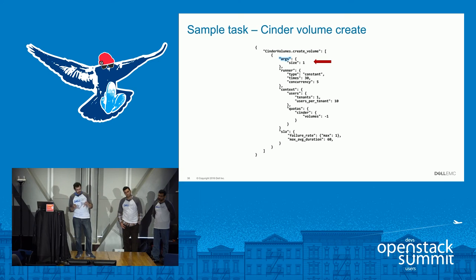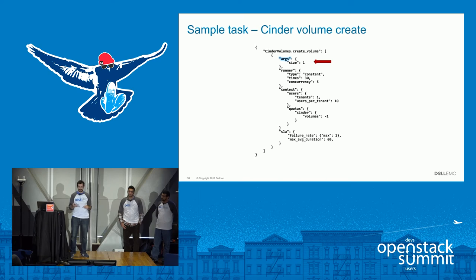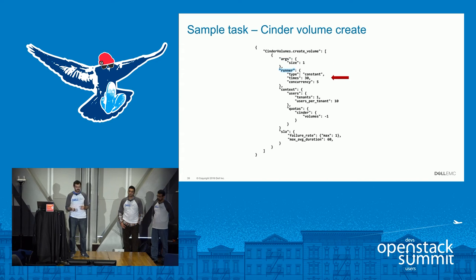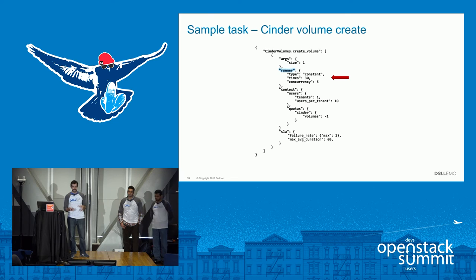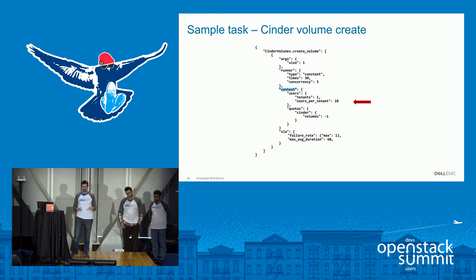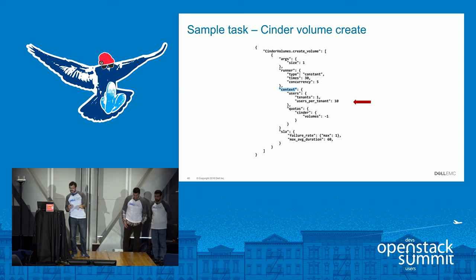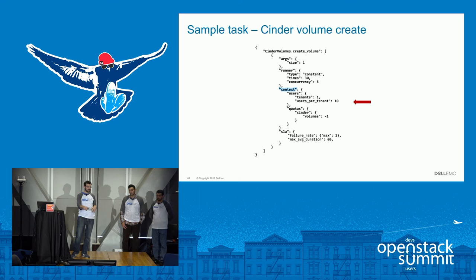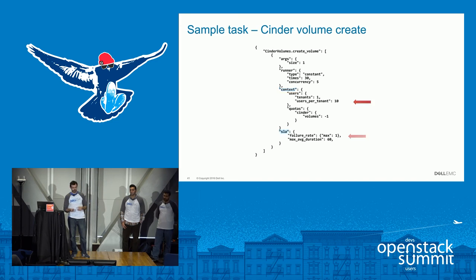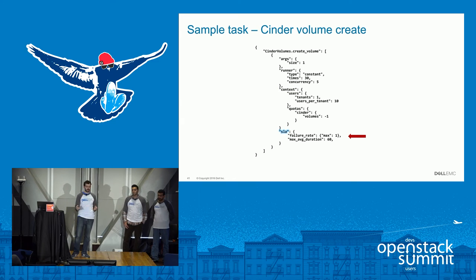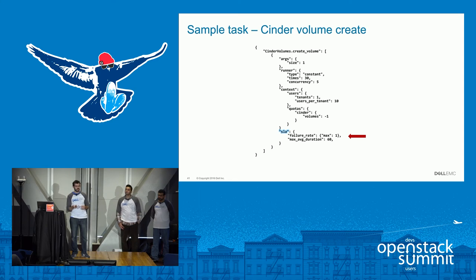Let's zoom in on a specific task — a simple Cinder volume create operation. First we have the args: in this case we just specify the size, which is one gigabyte. Then the runner: constant type, 30 times, with 5 concurrent at any point. Then the context: one tenant and 10 users within that tenant, and we modify the quota so the number of volumes is minus one — unlimited quota. Finally the SLA: we allow a maximum of 1% failure rate and the maximum average duration for a volume creation is 60 seconds.